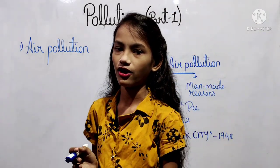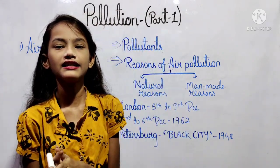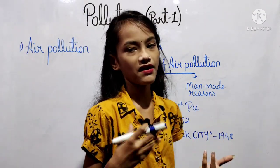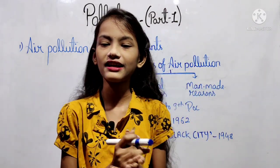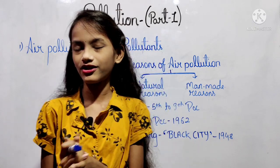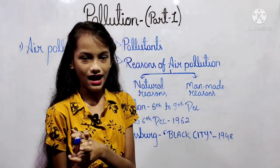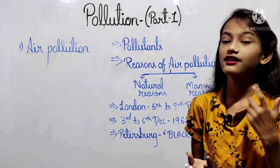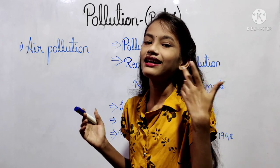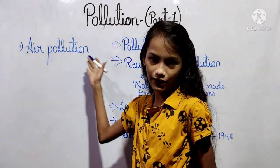The contamination of air by harmful substances such as smoke, particulate matter, poisonous gases, and microbes is called air pollution. वायु का संदूषण हानिकारक पदार्थों के साथ जैसे कि जहरीली gases, smoke, particulate matter, microbes - इन सबका संदूषण अगर वायु में होता है तो इसे air pollution कहा जाता है।